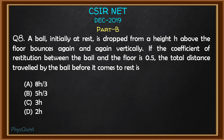Hello, welcome to FizzQuest. This is the solution video for CSIR NET December 2019, Part B, Question number 8. The question is: a ball initially at rest is dropped from a height h above the floor, bounces again and again vertically. If the coefficient of restitution between the ball and the floor is 0.5, the total distance travelled by the ball before it comes to rest is what we need to find out. Four options are given and we need to choose the correct option.